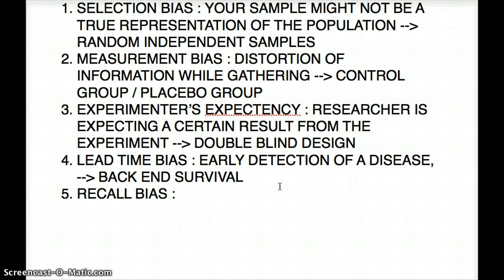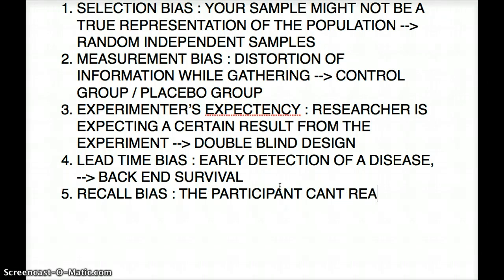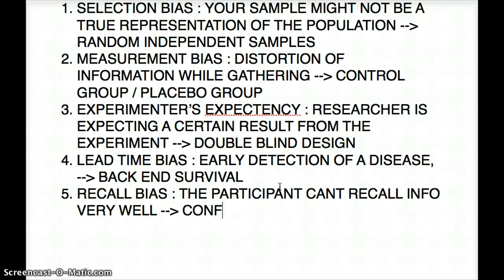The next one is recall bias. In recall bias, sometimes subjects or participants cannot remember information accurately. People sometimes confuse this with a physician recalling a certain patient — but it's the participant who can't recall information well. To beat this kind of bias, the only way is to confirm the information with other reliable sources. Sometimes a patient's relatives or caregivers know and keep track of things better than the patient themselves.